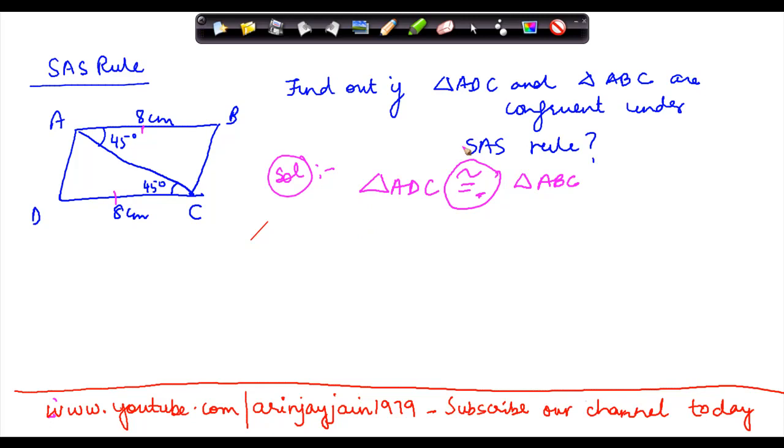Now insofar as the first side is concerned, that's a very obvious choice. We know that DC is equal to AB, is equal to 8 cm. Both these sides are equal. So the side criteria is done.